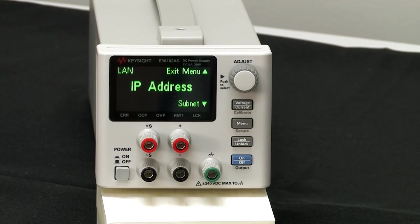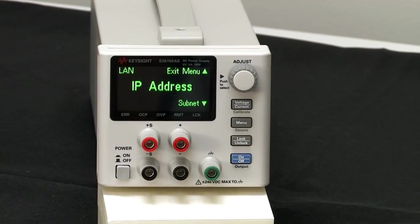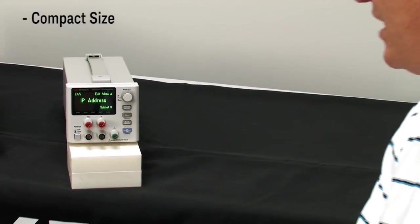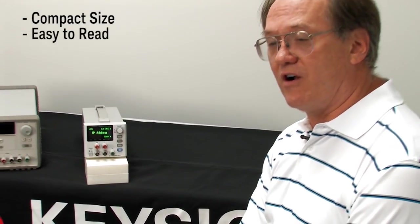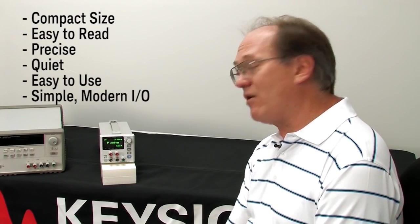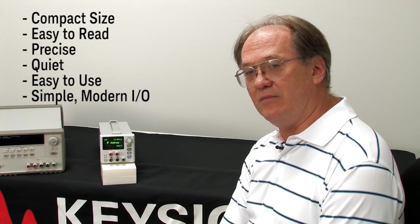So in summary, we have a really great set of features here that allow you to use this product easily on your bench. It doesn't take up a lot of real estate on the bench. It's easy to read from far away. It's very precise. It's quiet. It's very easy to use. And it connects using modern I.O. that you want to have. So you can power forward with the E36100 family of products.